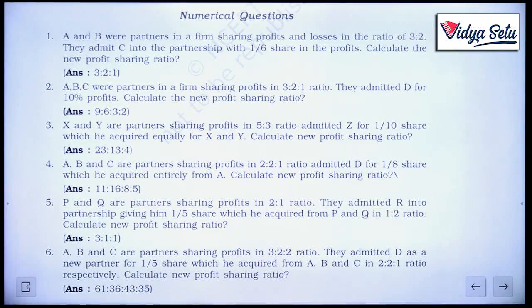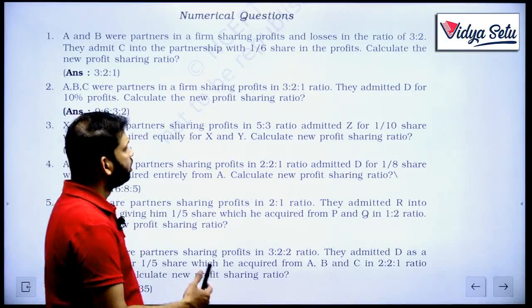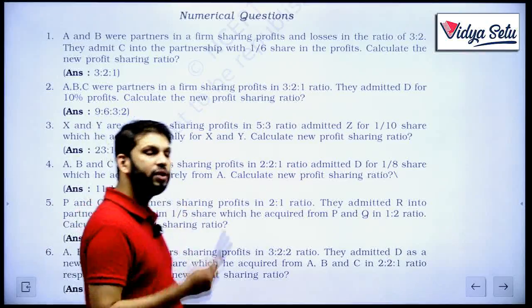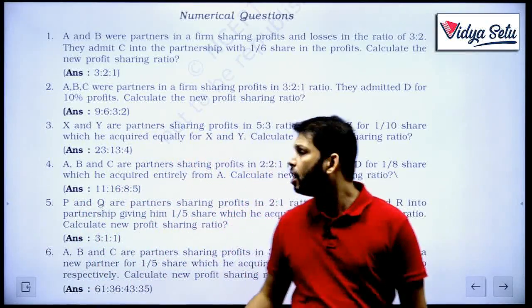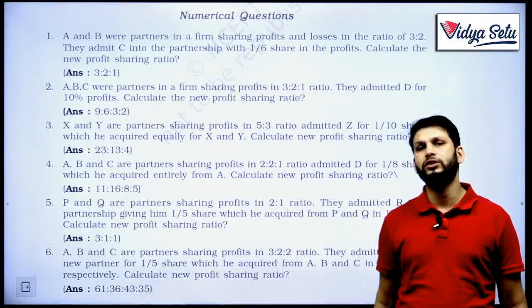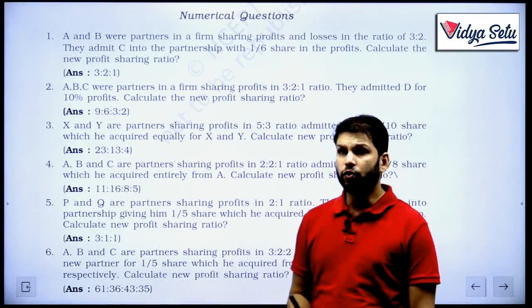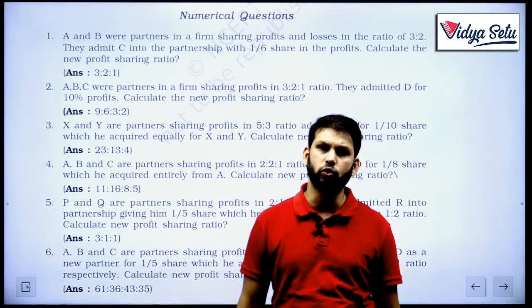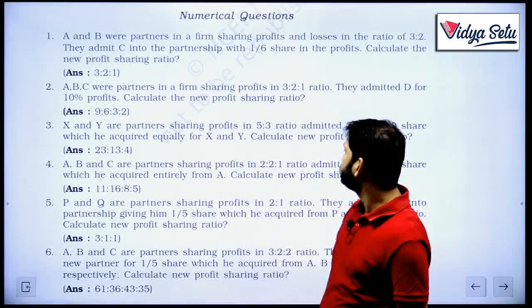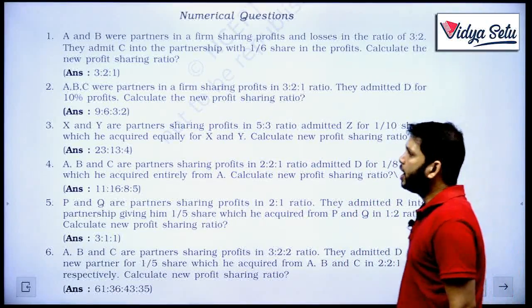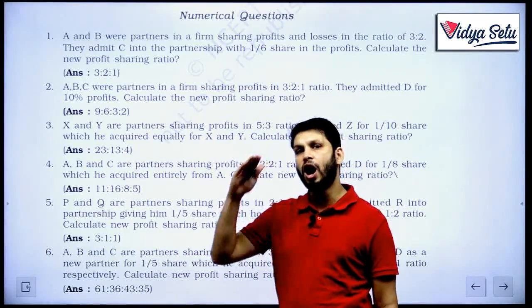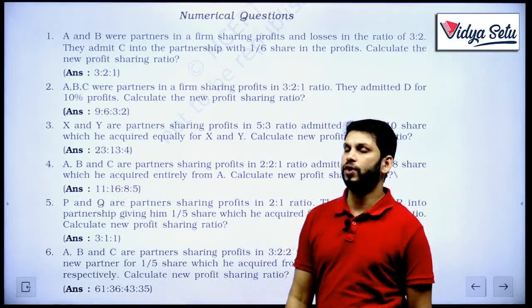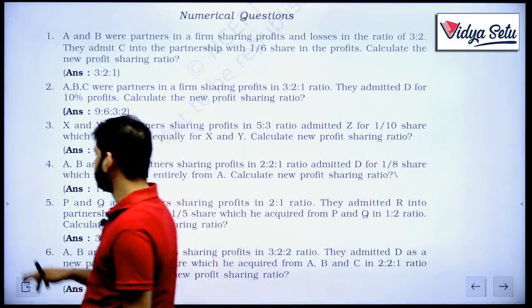Let us look at the third question. X and Y are partners sharing profits in the ratio of 5 is to 3, admitted Z for 1/10 share which he acquired. Now see, in the previous questions, it was not mentioned how the new partner is acquiring share. Whenever it is not written how the new partner is acquiring the share, we assume that the new partner is acquiring in the old partner's ratio. But in this question, they have told us that he is coming for 1/10 and this 1/10 he is acquiring equally. Half of 1/10 he is acquiring from X and half of 1/10 he is acquiring from Y.